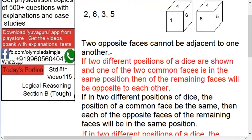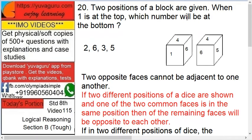First, two opposite faces cannot be adjacent to each other. Rule number one. Rule number two, this is important: if two different positions of a dice are shown and one of the two common faces is in the same position,